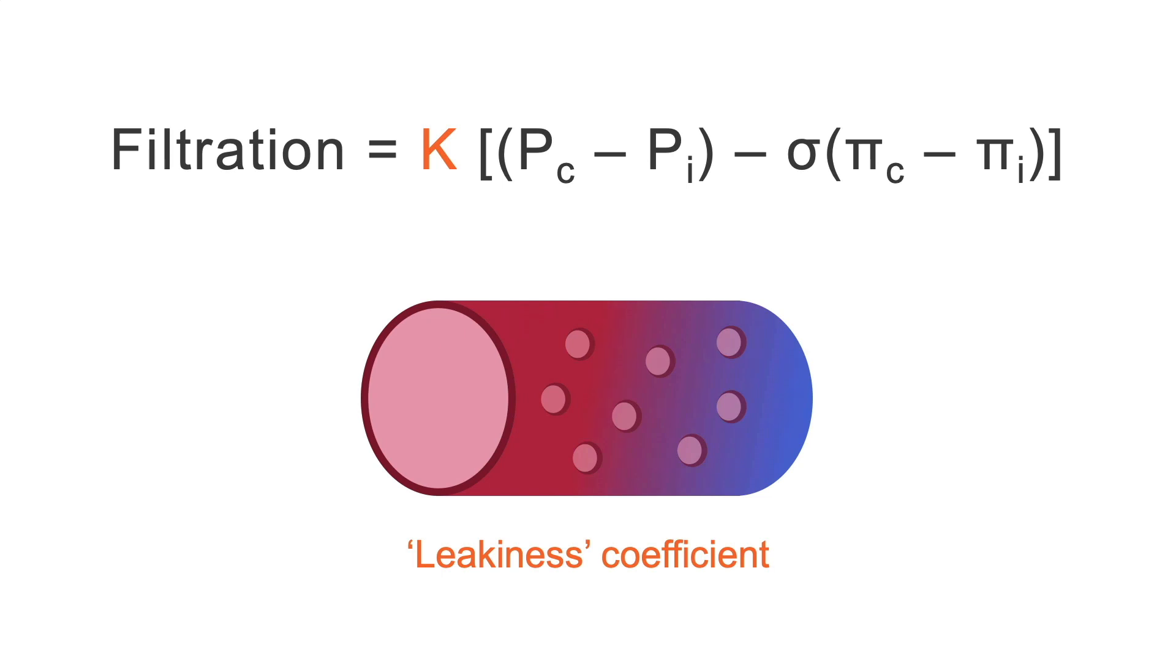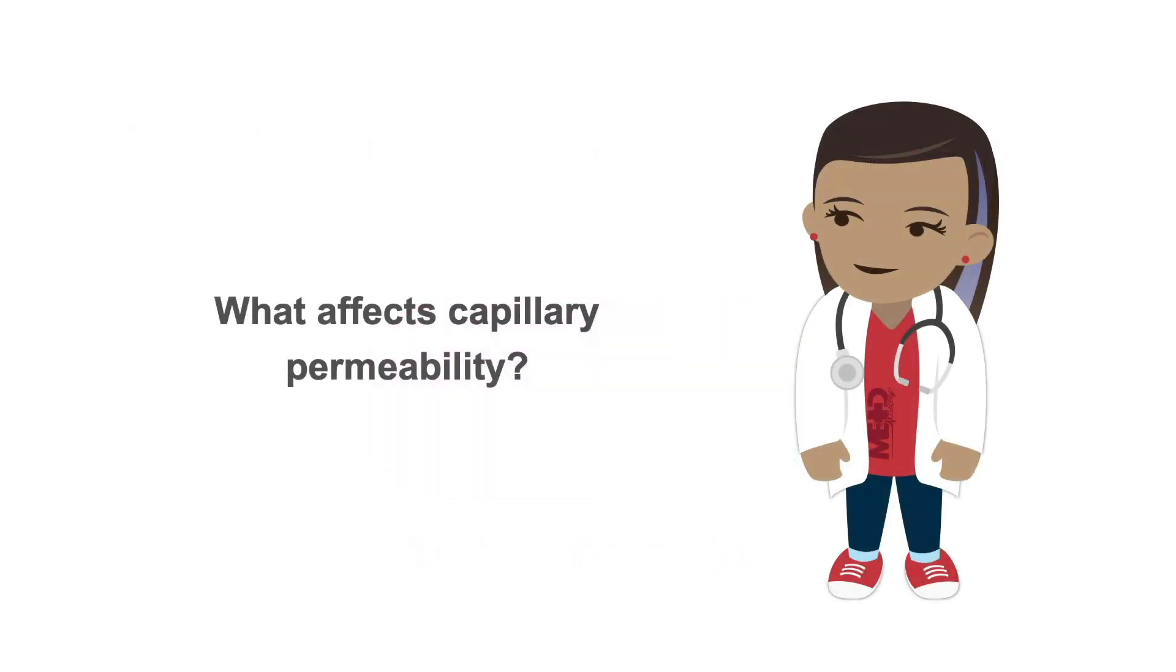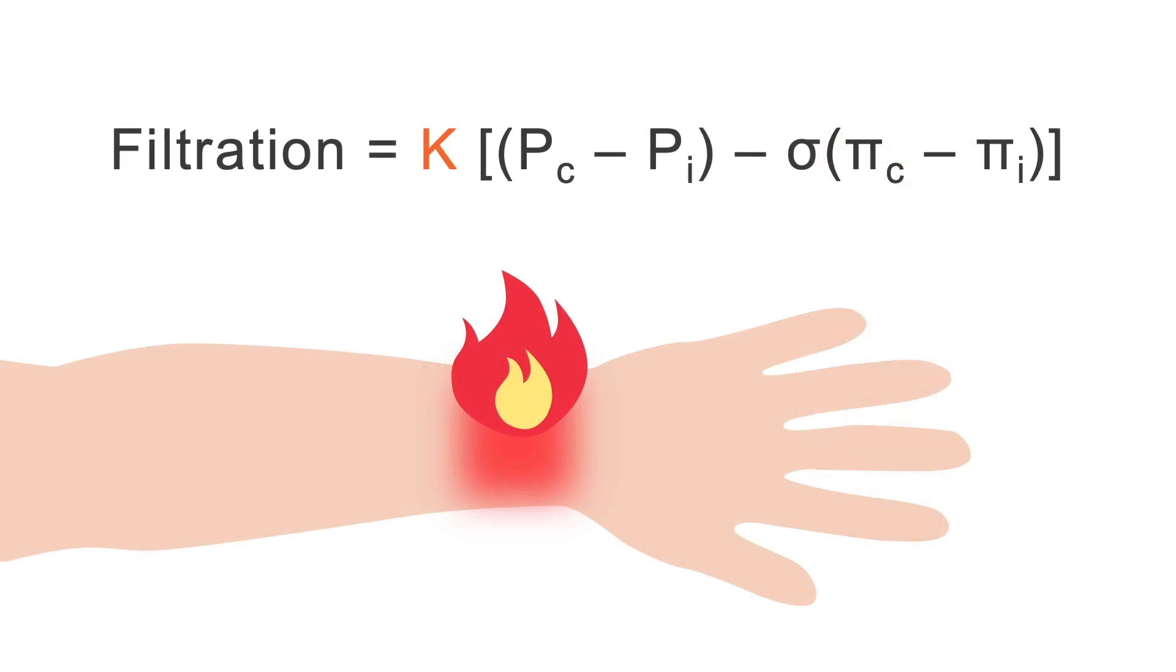As you can imagine, the leakier the capillary, the more fluid that can flow across its membrane. Some tissue beds have different capillary permeabilities that are built into the system. But what determines how capillary permeability can be changed? The most important factor to discuss is the inflammatory response.